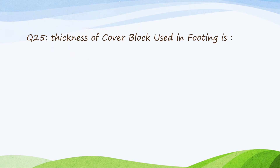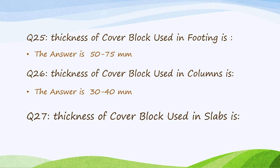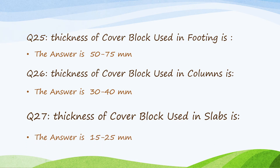Question 25: thickness of cover block used in footing is from 50 to 75 millimetres. Question 26: thickness of cover block used in columns is from 30 to 40 millimetres. Question 27: thickness of cover block used in slabs is from 15 to 25 millimetres.